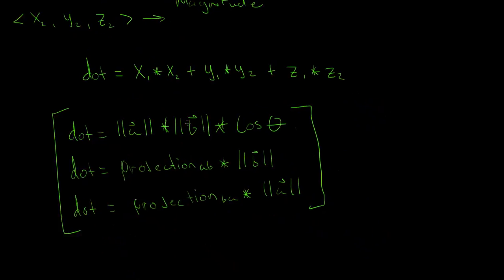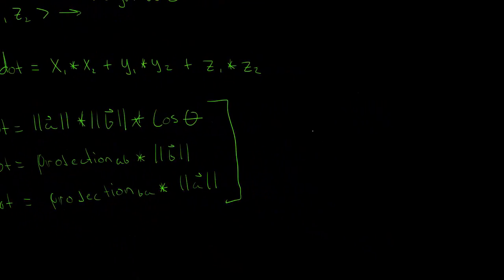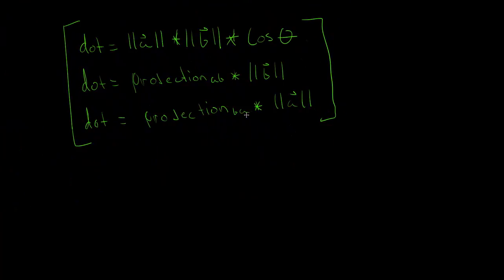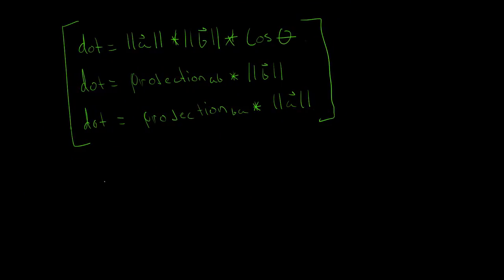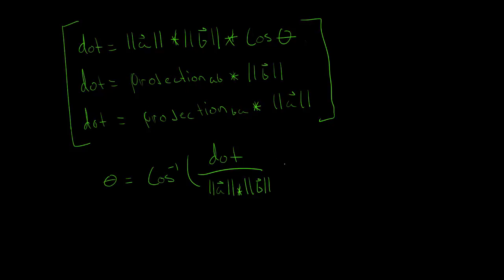Another thing you can calculate is the angle theta using: theta equals arc cosine of the dot product divided by the magnitude of A times the magnitude of B. And if both vectors are unit vectors, that simplifies to just theta equals arc cosine of the dot product, since magnitude is one. That's definitely a useful one.